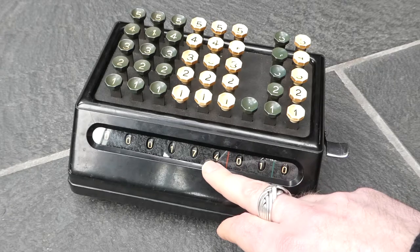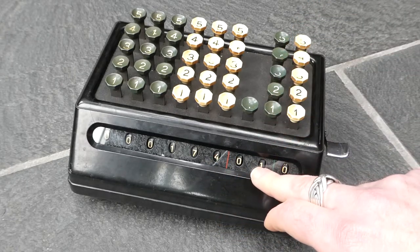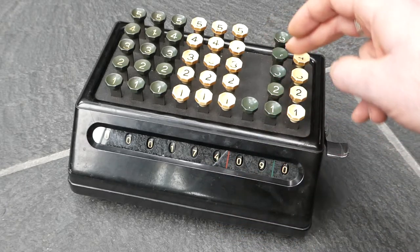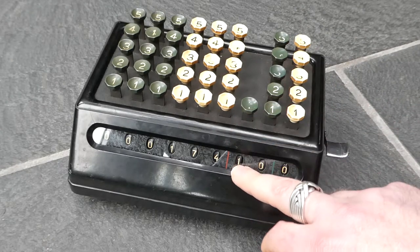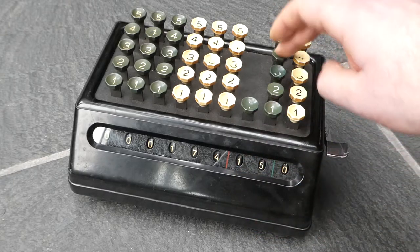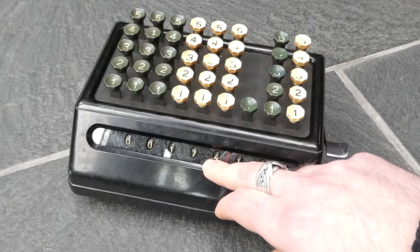20 shillings make a pound, so this column is an ordinary decimal column. It carries over after nine. But this column here carries over immediately after one. So 19 shillings make a pound.